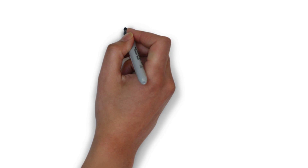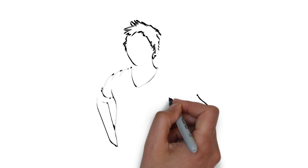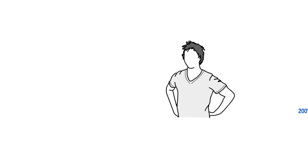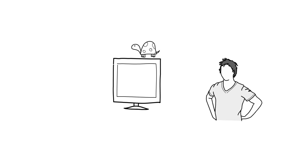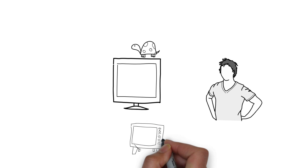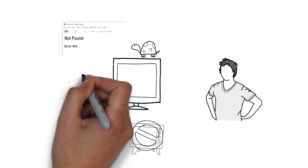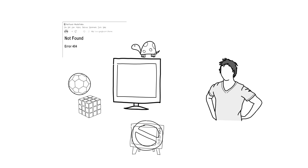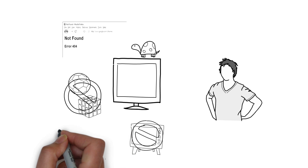This is John. He is a typical Internet user. Without IPv6, John may have some problems in his future. He will notice that some websites and social networks are slower. In some, he will not be able to watch videos. Some websites simply will not load anymore.